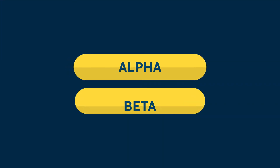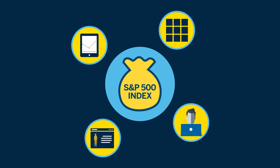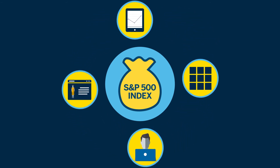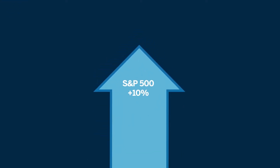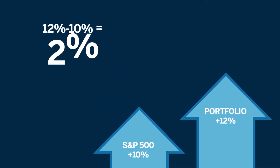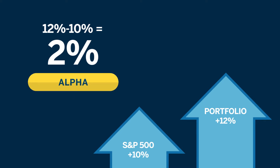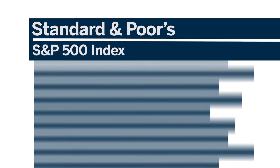Before we discuss portable alpha strategies, let's review both components separately — alpha and beta. Alpha is a measure of the active return on an investment, or the excess return above a benchmark such as the S&P 500. For example, let's assume the S&P 500 is up 10% over a period, and an investor's portfolio is up 12%. The additional two percentage points above the benchmark is referred to as alpha. Alpha can also be negative, as would be the case if the investor's portfolio returned less than the benchmark of 10%. While adding alpha is possible, the challenge in doing so has led to the popularity of passive investing.